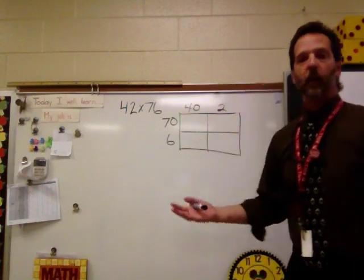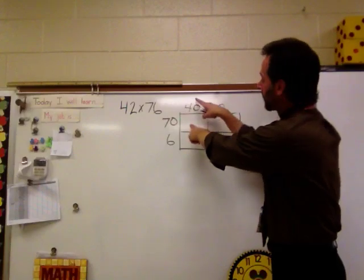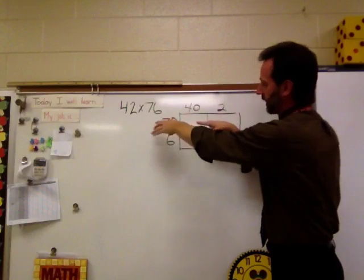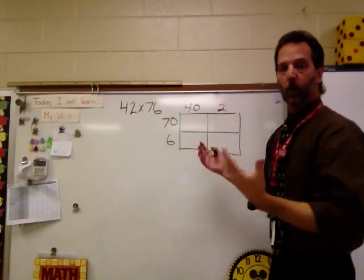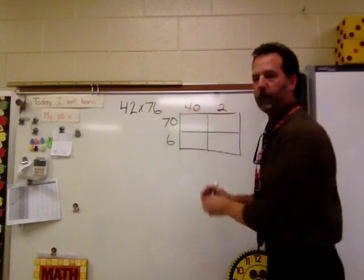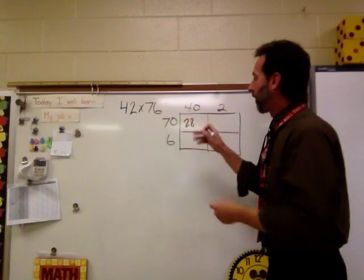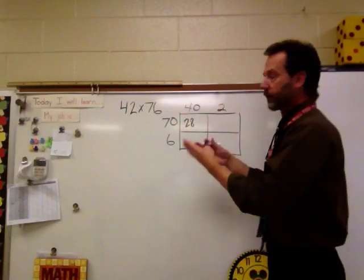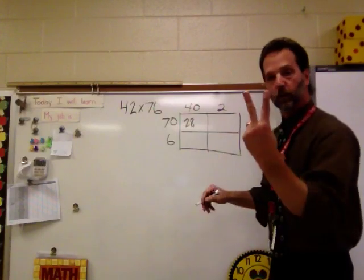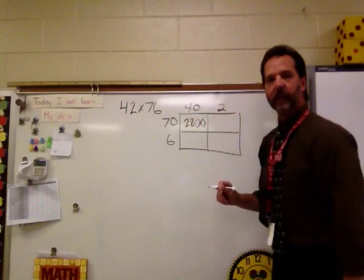So here we go. This is how the box method is going to work. We're going to start up here in this box. We would multiply 40 times 70. The 70 comes across, the 40 comes down. Now what we're going to do is say, what's 4 times 7? We're going to leave the zeros off for just a moment. 4 times 7 is 28. So we'll write 28. And now we're going to put those zeros back on. How many zeros do we have to add to the 28? Well, we took off one here and one there, so we've got to add two zeros back on. So 40 times 70 would be 2,800.